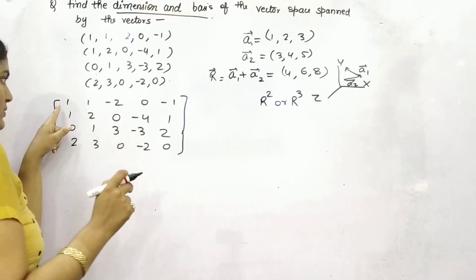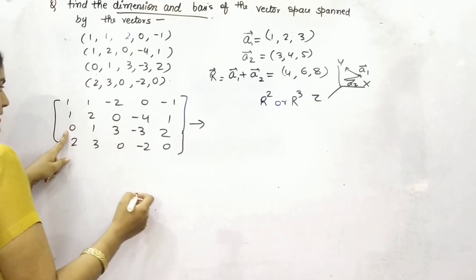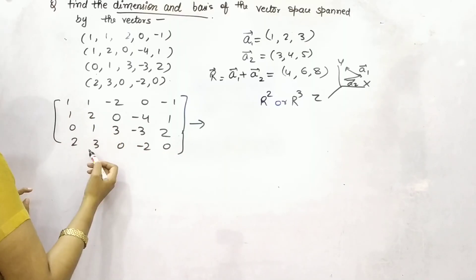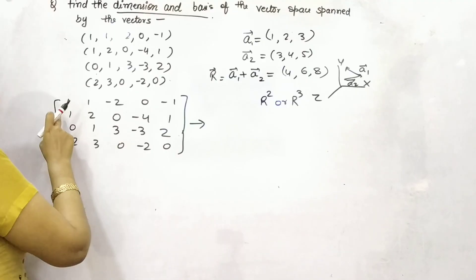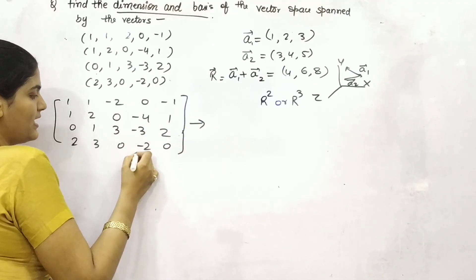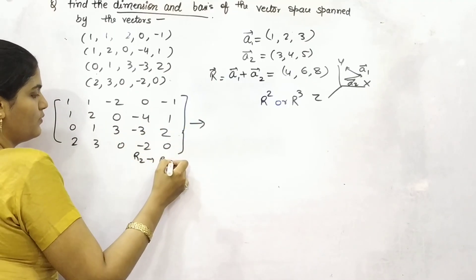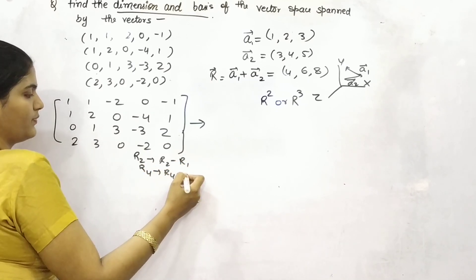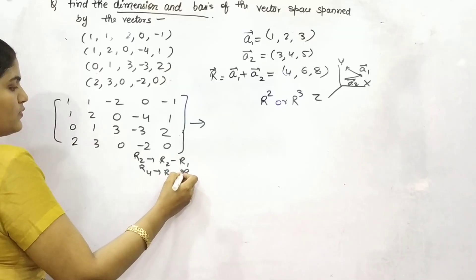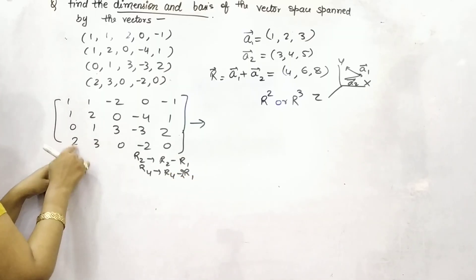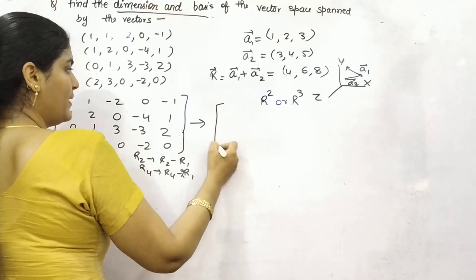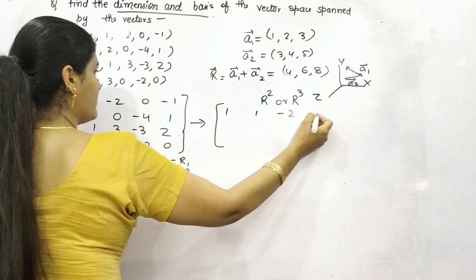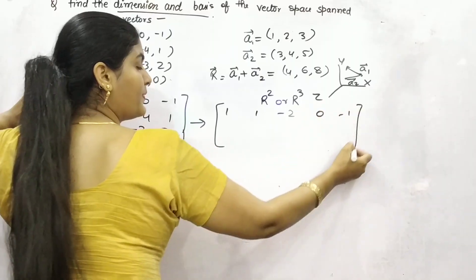Now, what you need to do, this is 1 already and this is 0. This is your diagonal matrix. Make these things as 0. Now, you can see what we can apply if we subtract R2 from R1 and for R4 also twice of R1. Then you will get 0, right? 2 minus 2 is 0. So it will be first as it is.